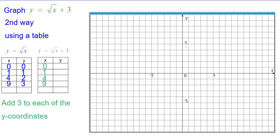Adding 3 to each of the y-coordinates, because of what's in the equation. So 0 goes to 3 and we'll plot it, 1 goes to 4, 2 increases to 5 so 4 comma 5, and 3 increases to 6 so 9 comma 6.